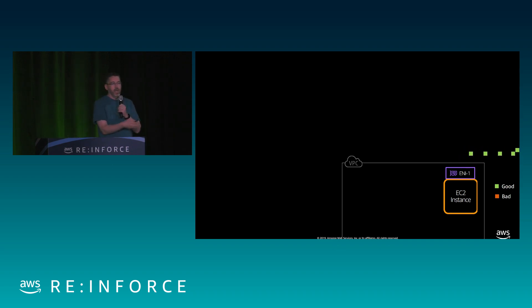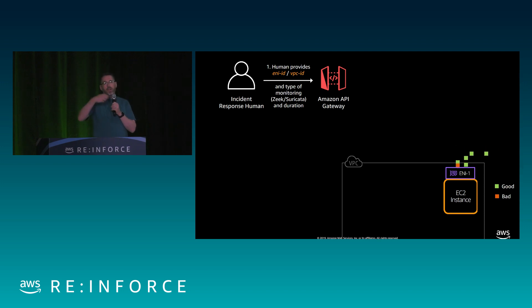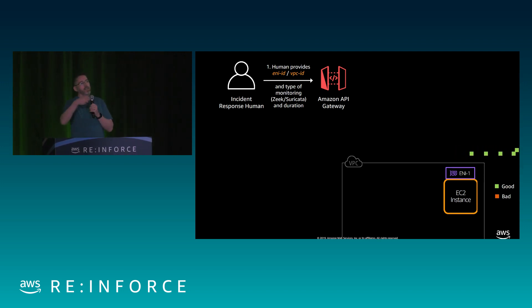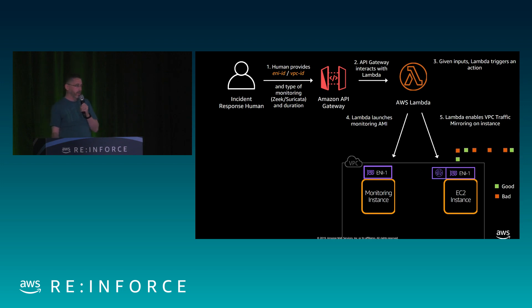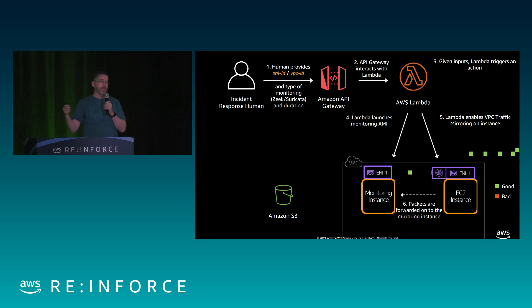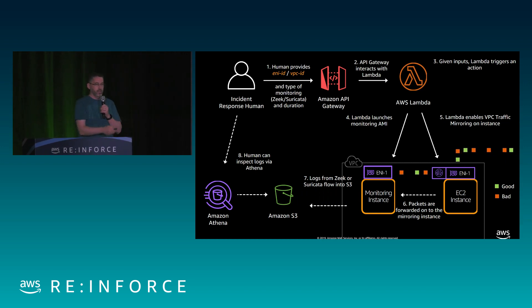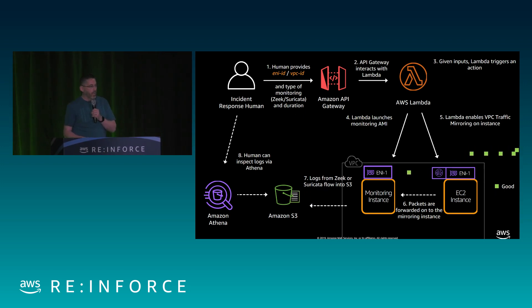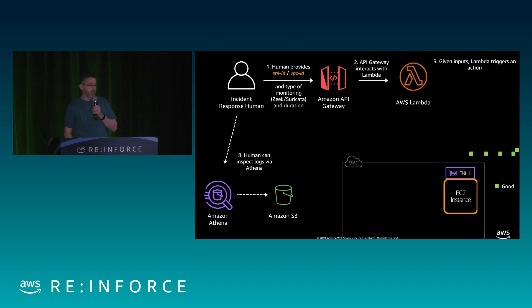Another option is a manual incident response trigger. Maybe it's not GuardDuty — maybe one of our other monitoring systems flags a suspicious instance. Our incident response team can hit an API gateway, provide the ENI ID, and spin up a Zeek session via Lambda. Lambda creates the VPC traffic mirroring session, runs the monitoring instance, sends logs to S3, sends them into Athena, and alerts the incident response team. This gives them live visibility into all activity during an event — strong signals and high-quality, high-fidelity logs — and we clean up afterward so we don't consume the account holder's resources.